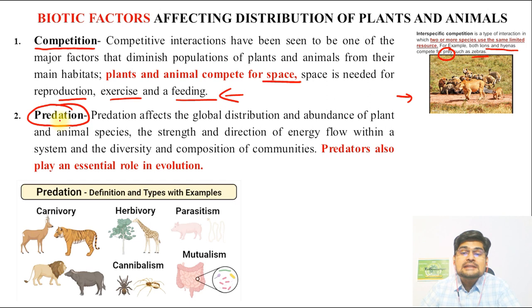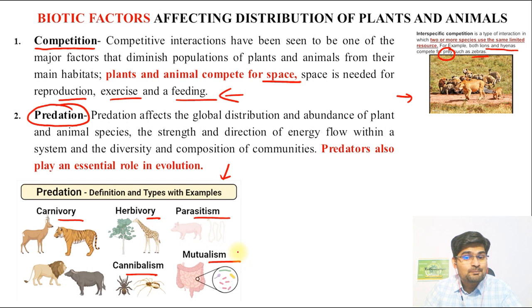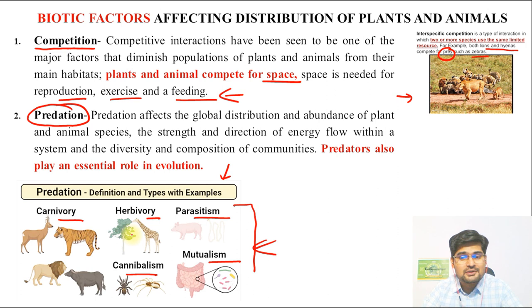The second biotic factor is predation. The predator-prey relationship is vital for the maintenance of food chains and food webs. Predators feed on prey, initiating the food chain and food web system. Types of predation include carnivory, herbivory, parasitism, and cannibalism — when one member of a species eats another. The direction of energy flow in the entire ecosystem is regulated through predation, making it a critical factor.